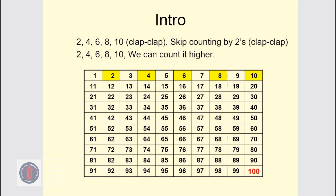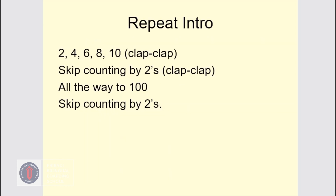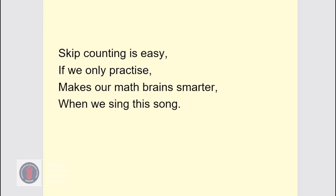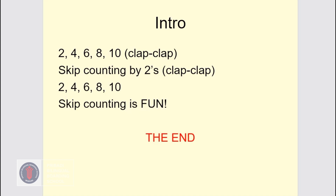Please practice at home. Do it like this: 2, 4, 6, 8, 10 — clap, clap, clap. Skip counting by 2's — clap, clap, clap. All the way to 100. Skip counting by 2's. Skip counting is easy if we only practice — it makes our math brain smarter when we sing this song. 2, 4, 6, 8, 10 — clap, clap, clap. Skip counting by 2's — clap, clap, clap. 12, 14, 16, 18, 20. Skip counting is fun — clap, clap, clap.